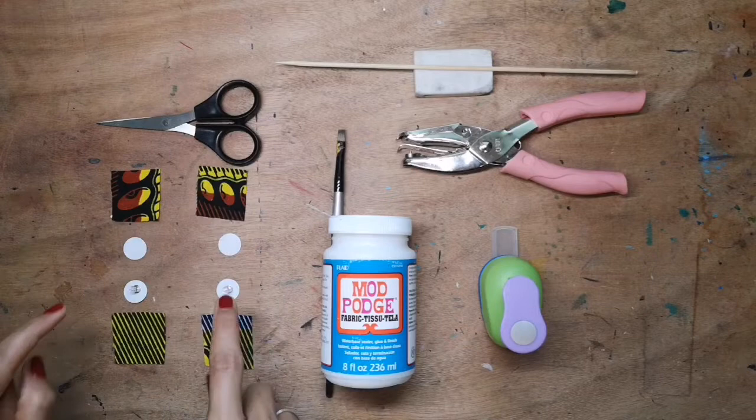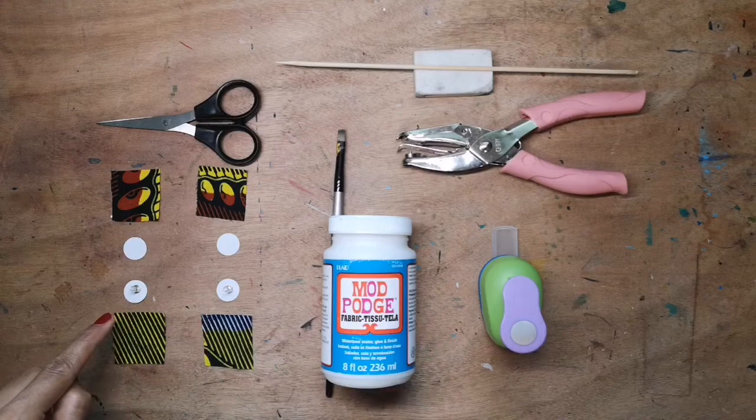You will need four little circular discs. You can cut them by hand or you can use a little paper punch if you have one.